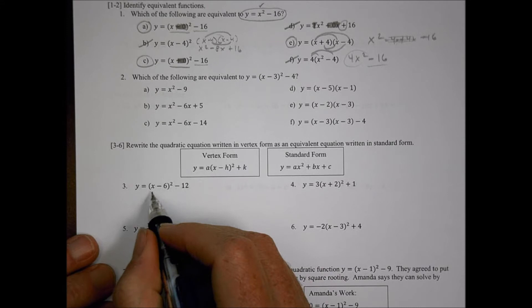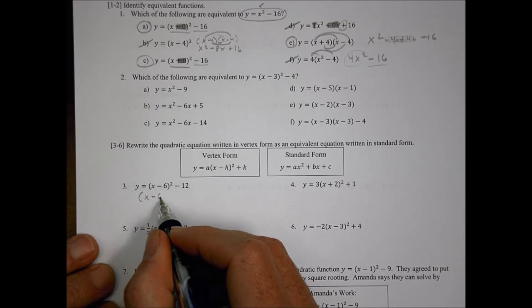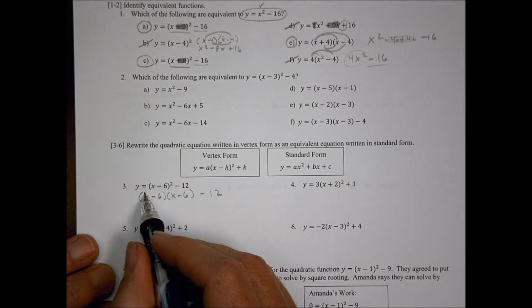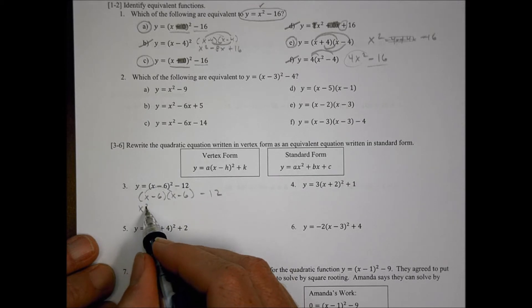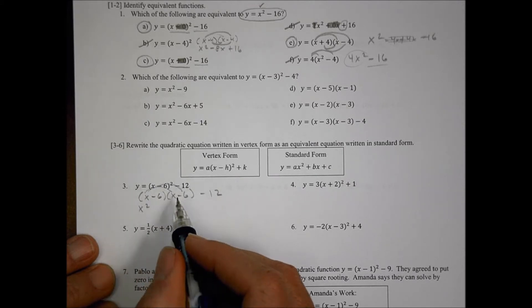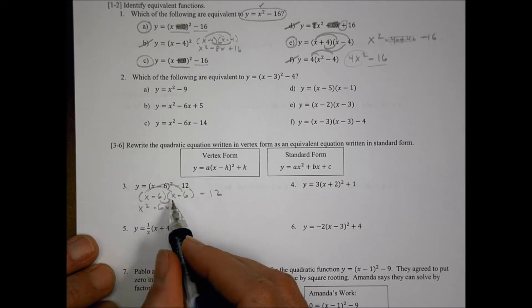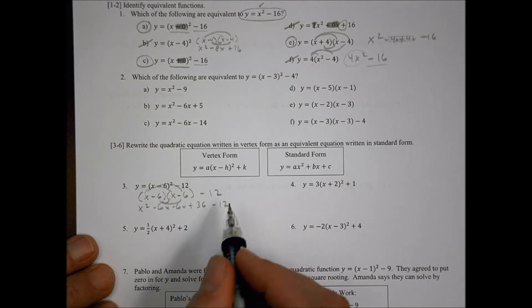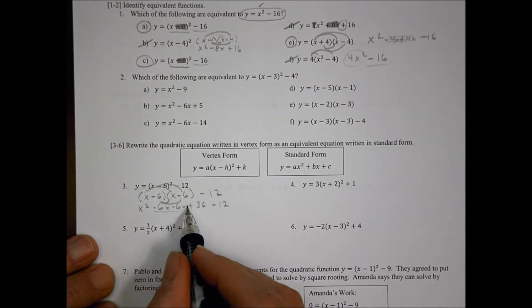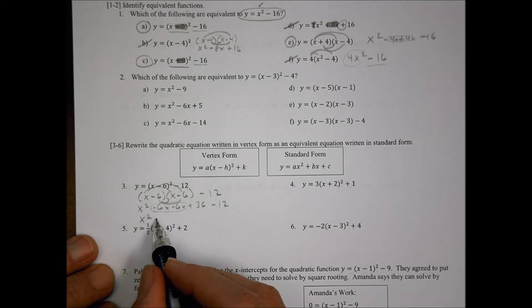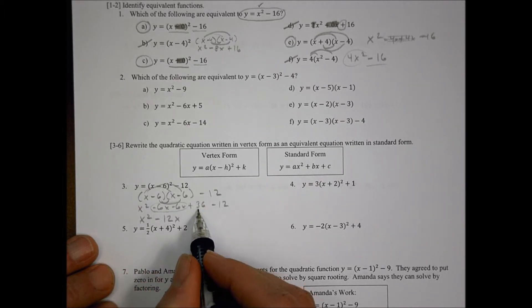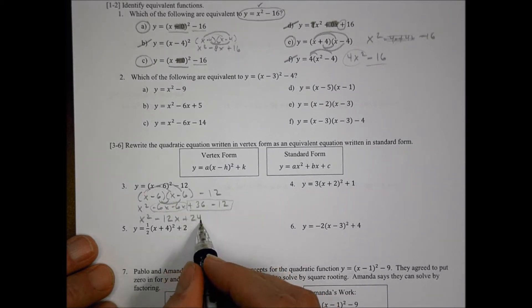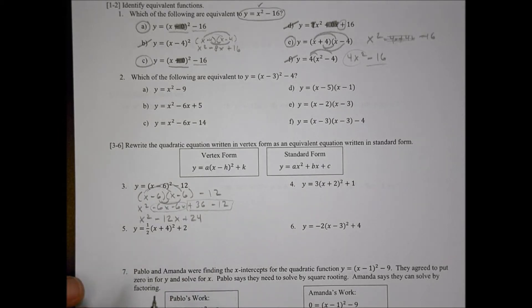First, we have X minus 6 squared minus 12, which can be rewritten as X minus 6 times X minus 6, still minus 12. Multiplying out: X times X is X squared; X times negative 6 is negative 6X; another negative 6X; and negative 6 times negative 6 is positive 36. Bringing down the negative 12, I group the negative 6X terms to get negative 12X, then 36 minus 12 equals positive 24. So the answer is X squared minus 12X plus 24.